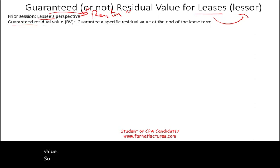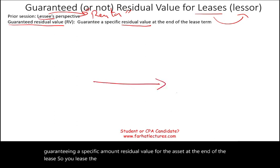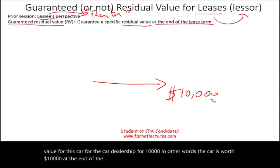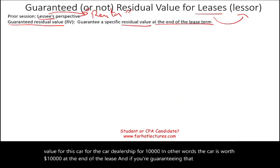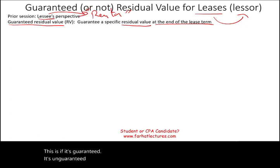Let's review what is guaranteed residual value. It means a party is guaranteeing a specific residual value for the asset at the end of the lease. For example, you lease a car and five years later return it, guaranteeing a value of $10,000 for the car dealership. If the car isn't worth $10,000, you have to come up with the money. If it's unguaranteed, you don't have to do anything.